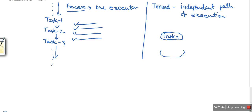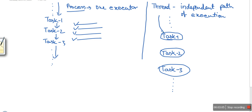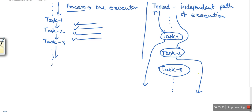Now taking the same program but optimized using multi-threading — we have created multiple threads to perform multiple tasks. With three threads: thread one executes task one and is done, thread two is assigned task two and exits, and thread three executes task three and exits. The path of execution is different for each thread.